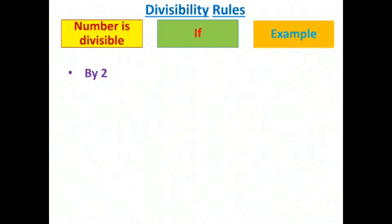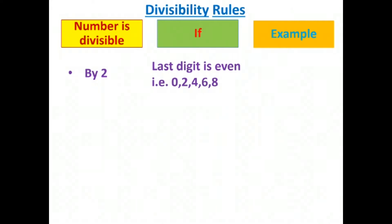A number will be divisible by 2 if the last digit is even, that is 0, 2, 4, 6, or 8. Here the example is 128. The last digit of 128 is 8, and 8 is an even number, so 128 will be divisible by 2.